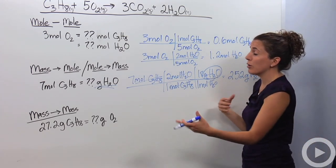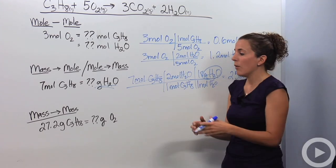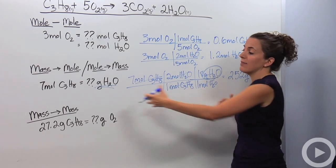So if I started out with 7 moles of C3H8, I actually produce 252 grams of water. To actually go a little bit further because, again, we don't usually measure in moles, we only measure in grams. We're going to do a mass to mass relationship and extend this just a bit further.